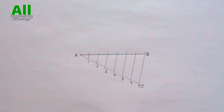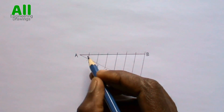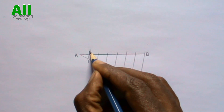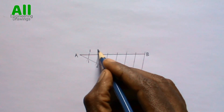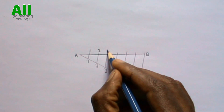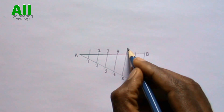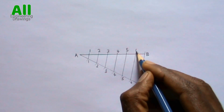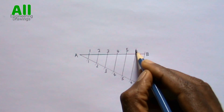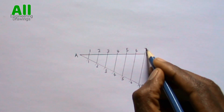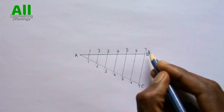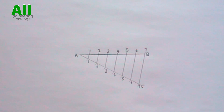Number the points where the lines intersect line AB. Line AB has now been divided into seven equal parts.